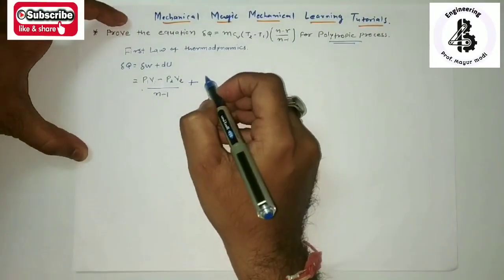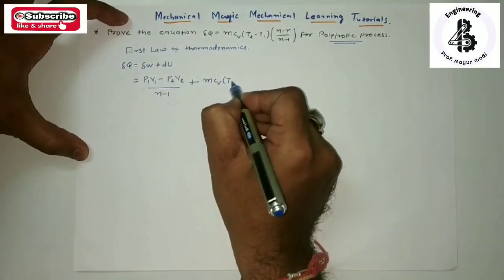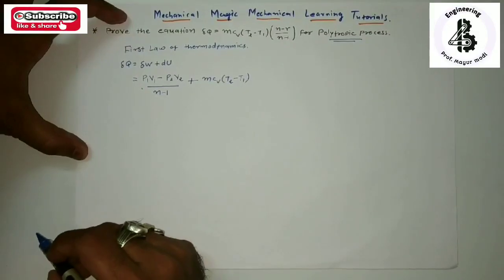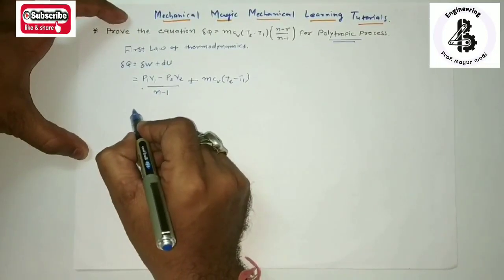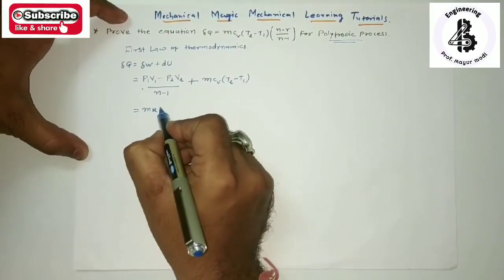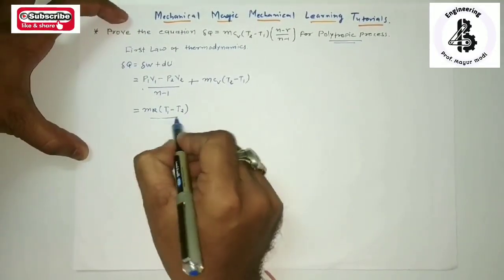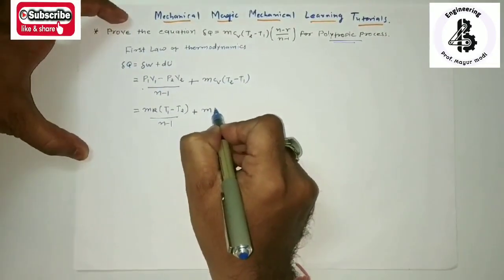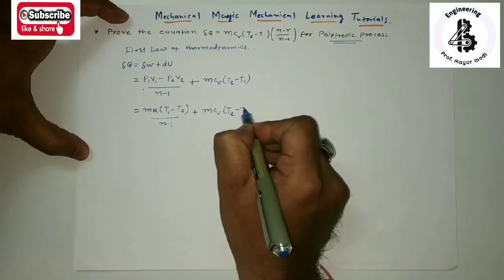For change in internal energy that will be mCv(T2 minus T1). Now I want to convert pV in the form of temperatures, so that gives mR(T1 minus T2) divided by (n minus 1) plus mCv(T2 minus T1).